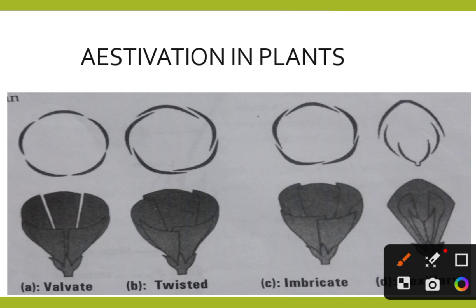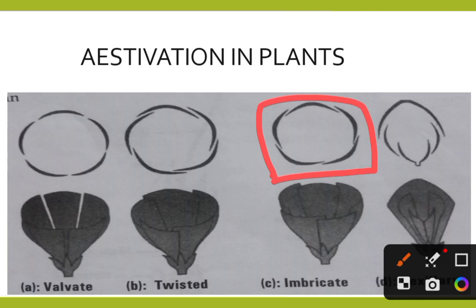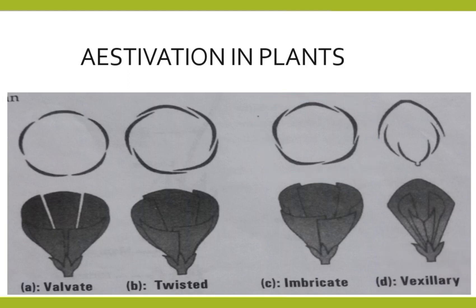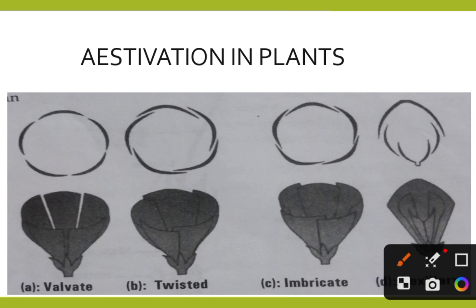Next is imbricate aestivation. In imbricate aestivation, there is no proper order — one petal is completely inside, one petal is completely outside, and others are partially overlapping without any regular pattern. When petals are arranged in this way without any proper order, we call it imbricate. Gulmohar flowers show this type of aestivation.